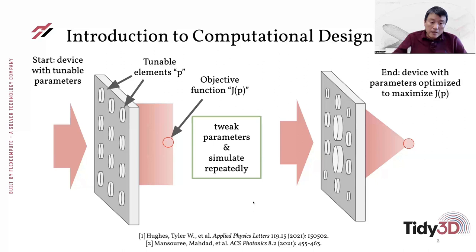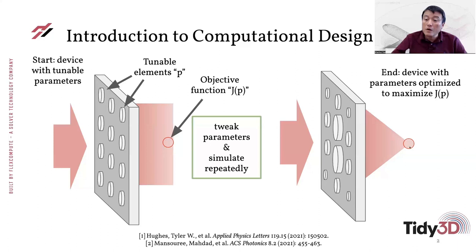For that purpose, the natural way to do the design is to imagine a focal point to the right of the device, and then adjust the tunable elements — in this case the radii of the cylinders — such that eventually the light is focused into that region. You can define an objective function as the amount of energy focused inside the focal region, so the computational design becomes an optimization problem where you maximize the objective function by tweaking the parameters of the tunable elements.